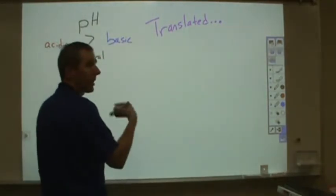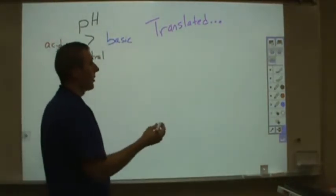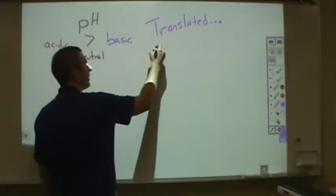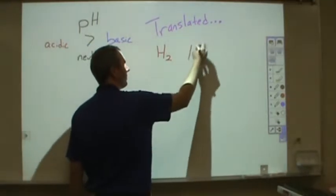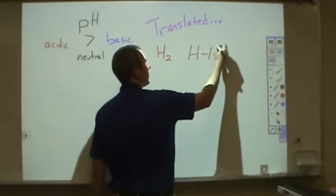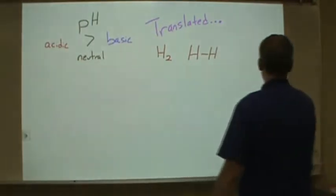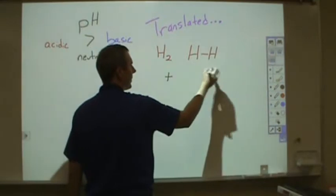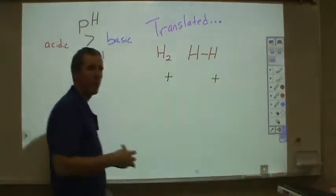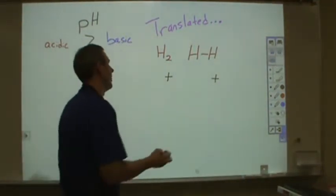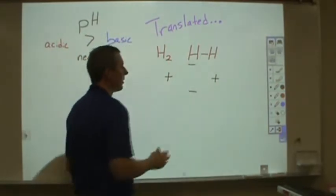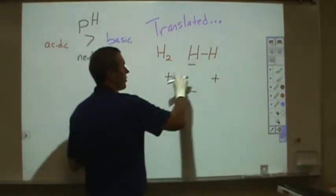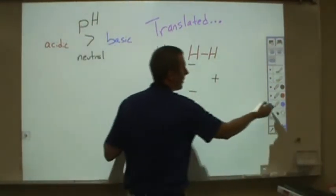Now to understand how an acid and base work, what you first want to understand is why would things stick together, why do things bond. If we look at a very simple molecule which is H2, you have a hydrogen bonded to a hydrogen. A hydrogen atom typically is just a proton, and they both have electrons. Why would those two protons stick together? Well, because the negative charge goes in between them and spends more time between these two protons.